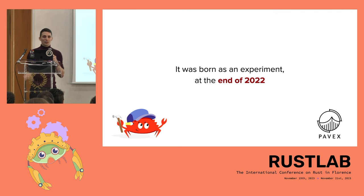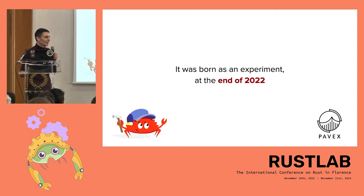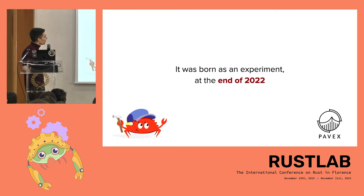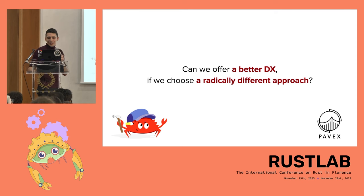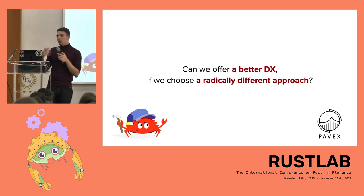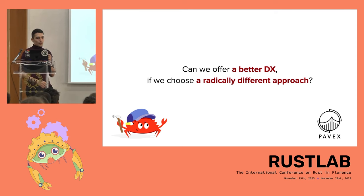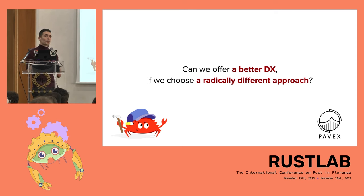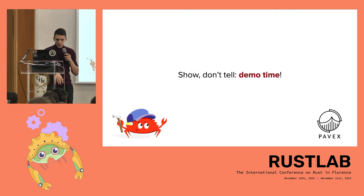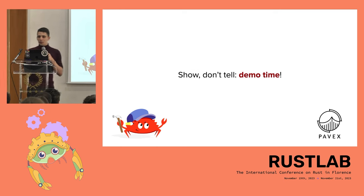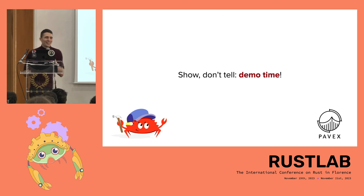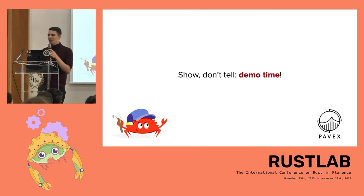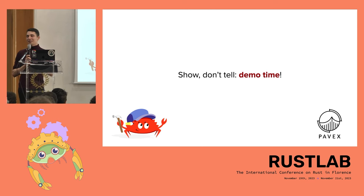I was like, I've been doing Rust for six years, I can't debug this — how can a reasonable person be expected to? The question is: can we offer a better developer experience if we choose a radically different approach without giving up those compile-time checks that we truly like? Now I want to demo this, but I need two hands, so I need a volunteer to hold this mic.